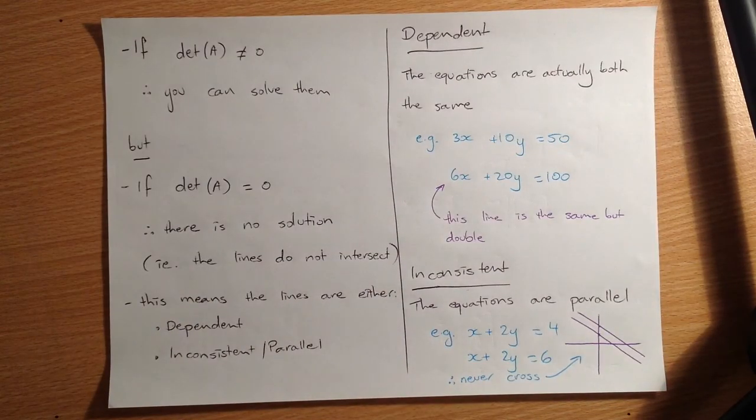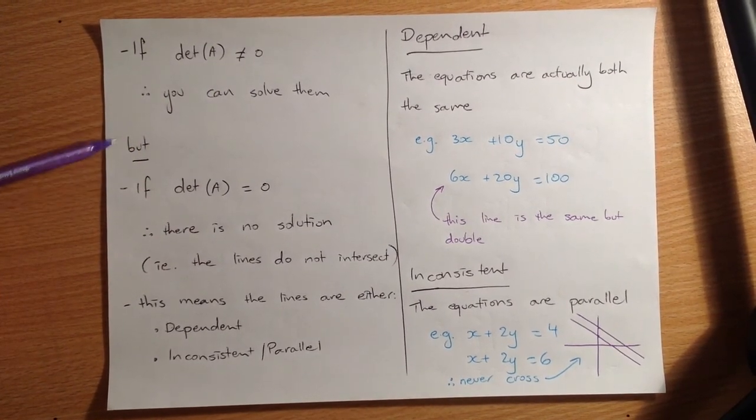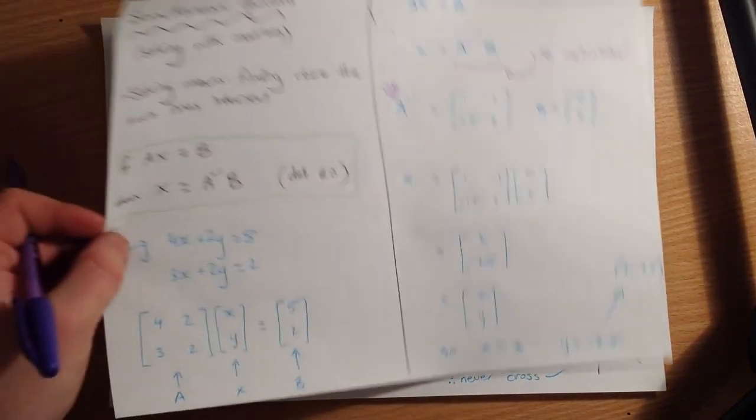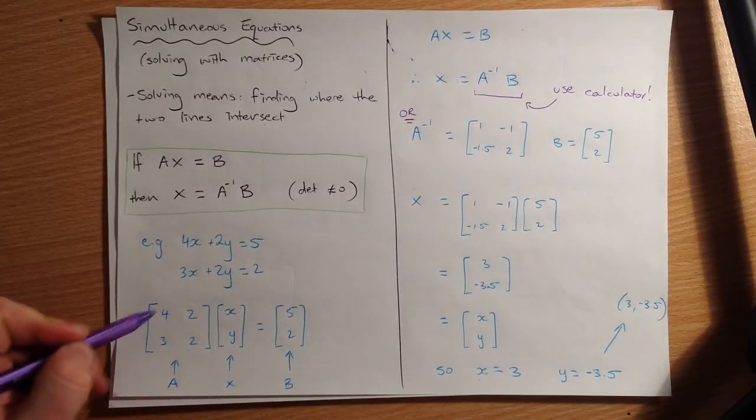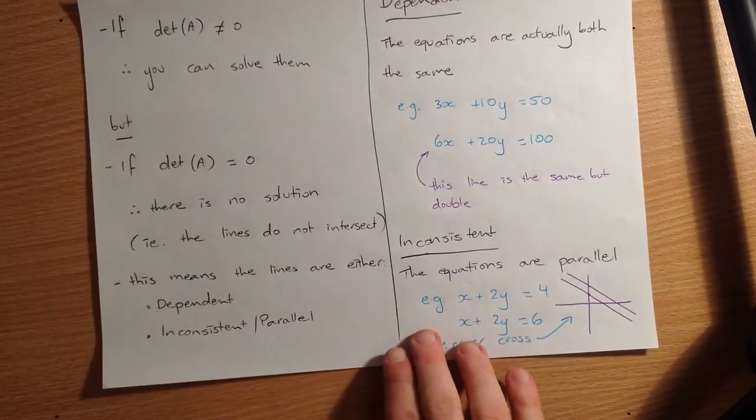So here's some exceptions. If the determinant doesn't equal zero, that's fine. You can do everything like normal. But if the determinant of that A matrix, remember the A matrix was this one down here with all the coefficients. If the determinant of that matrix is zero, then we've got problems.